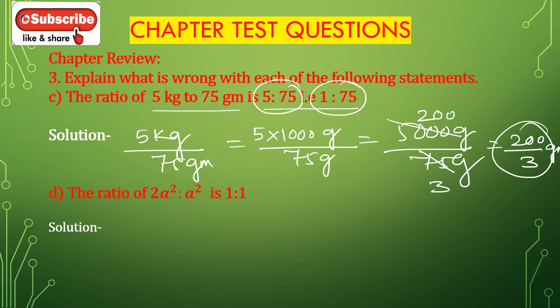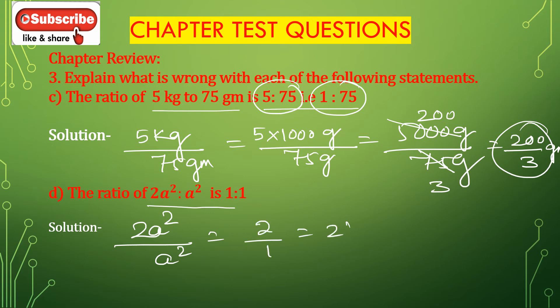Bit D: The ratio of 2a² is to a² is stated as 1 is to 1. But 2a² divided by a² equals 2 divided by 1, which is equal to 2 is to 1. It is mentioned as 1 is to 1, which is incorrect. So the ratio of 2a² is to a² is 2 is to 1.